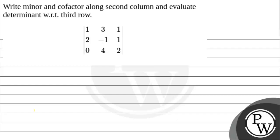Hello, so our question here: write minor and cofactor along the second column and evaluate the determinant with respect to the third row. My matrix here is 1, 3, 1; 2, minus 1, 1; 0, 4, and 2.